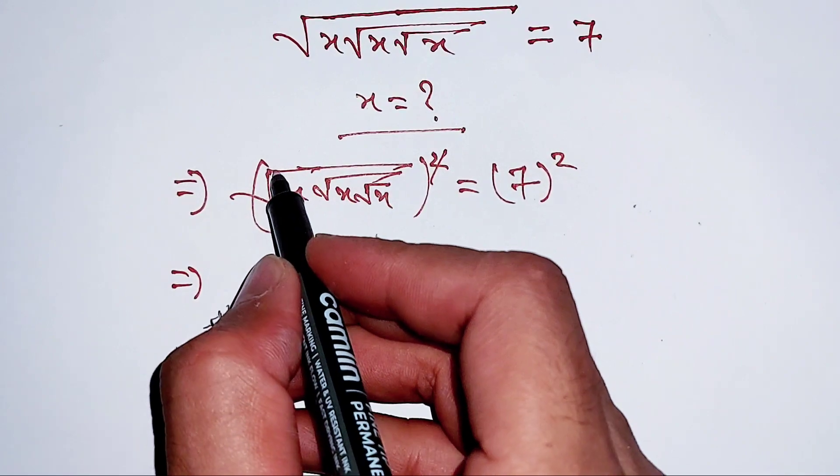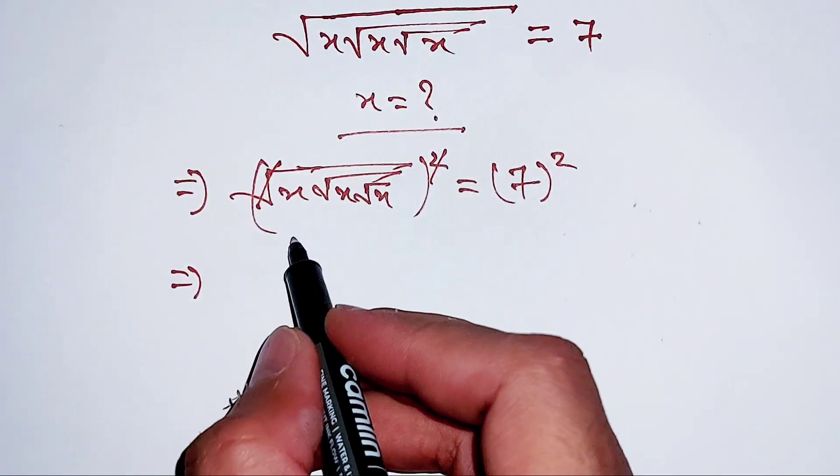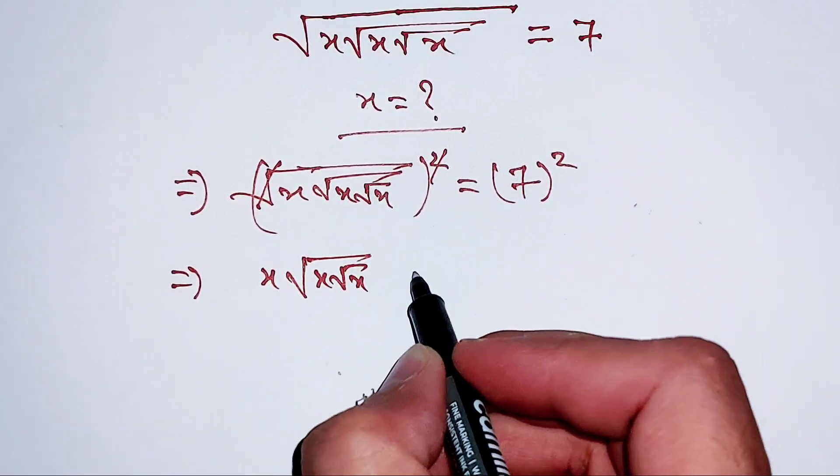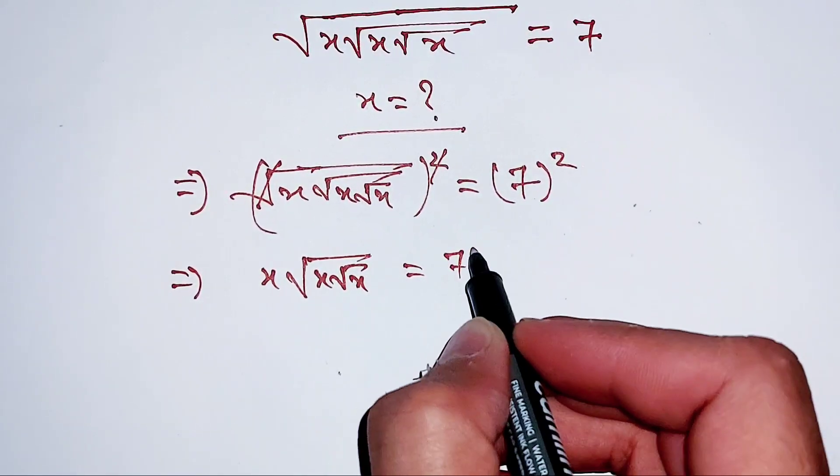Now, this square will cancel out this square root, and this is equal to x times this and this. And this is 7 squared.